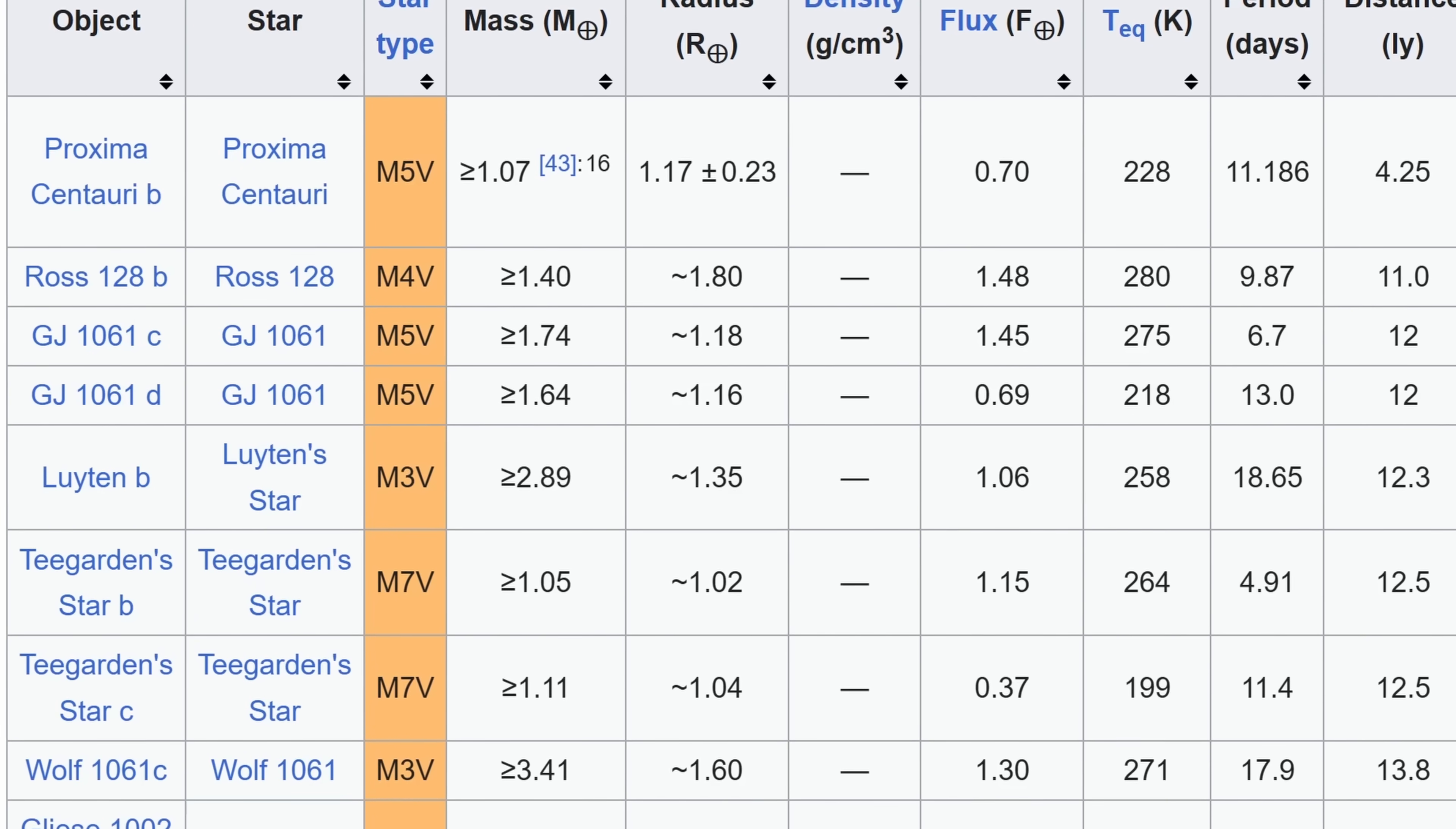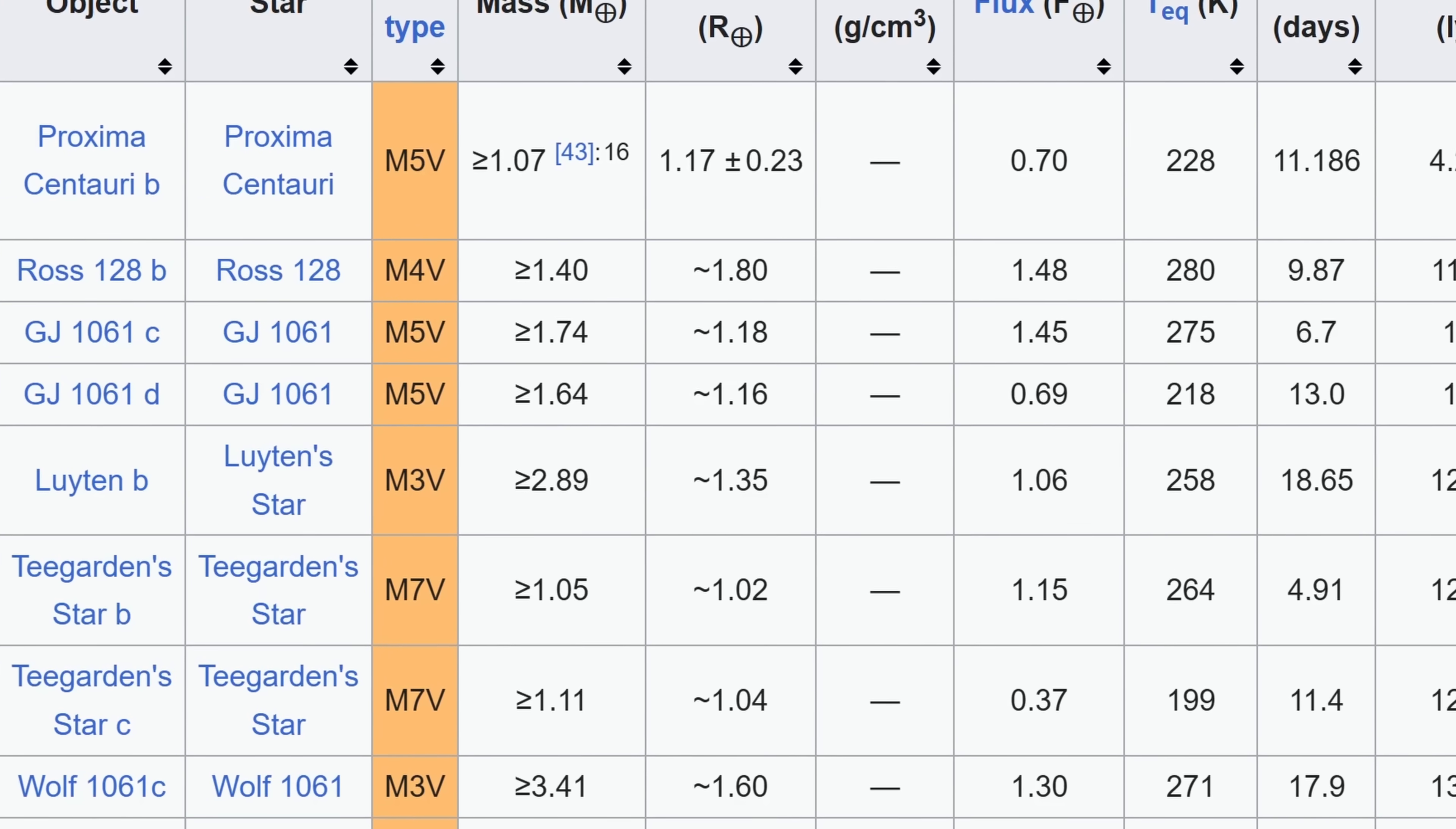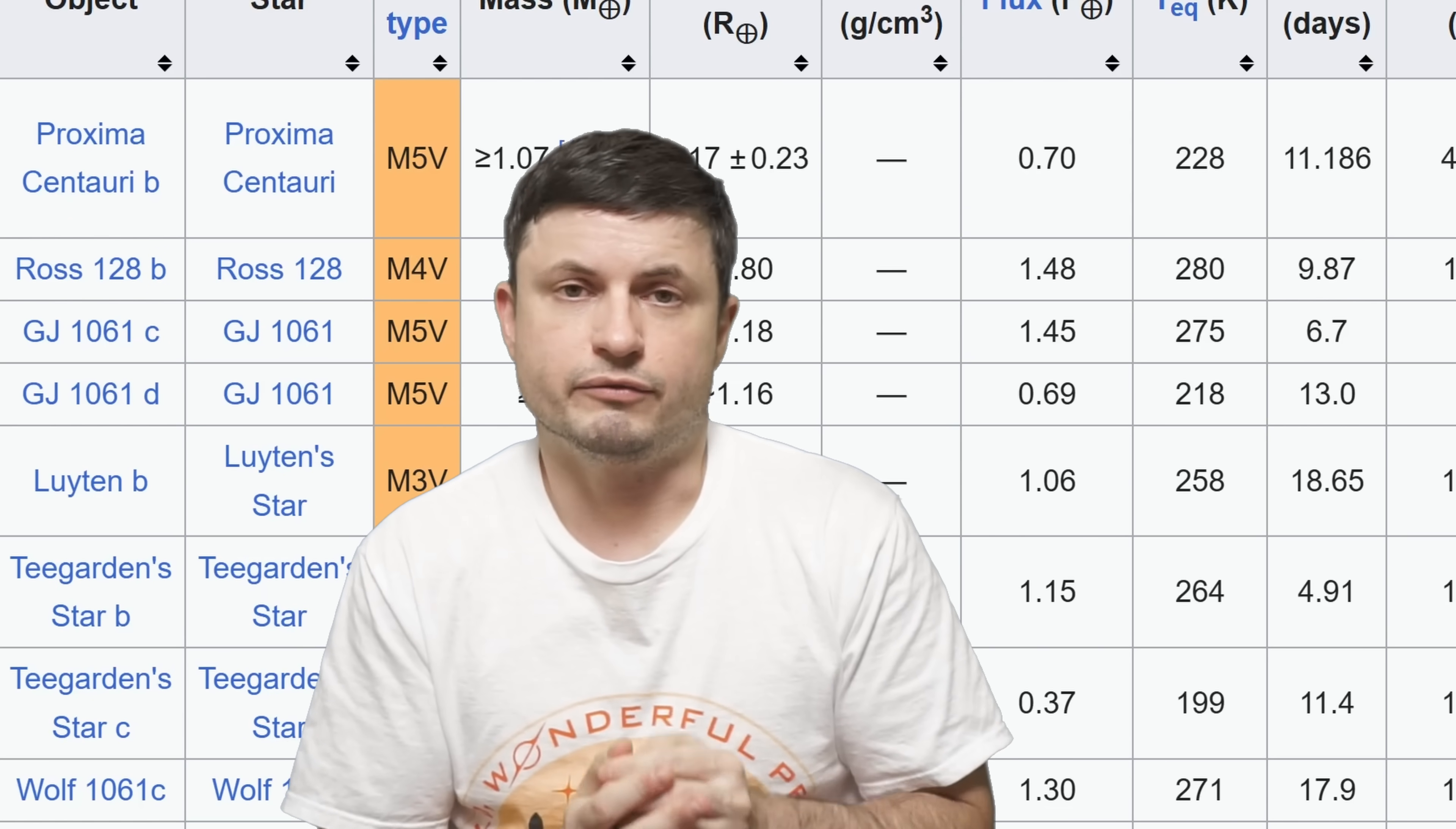All of the nearest potentially habitable planets discovered in the last decade all seem to orbit red dwarfs, and in many cases very active red dwarfs. You can find out more about some of these planets in additional videos in the description below.